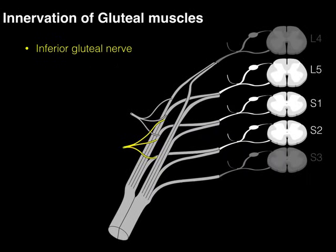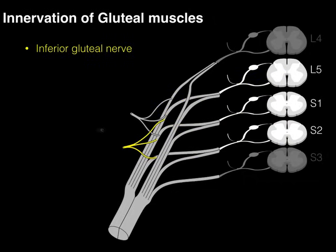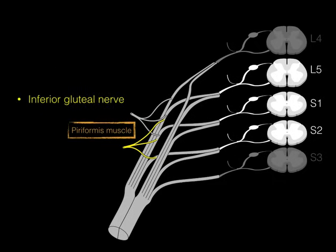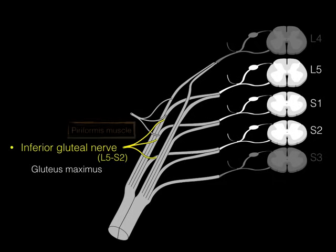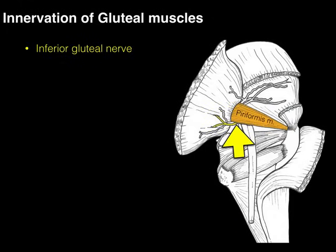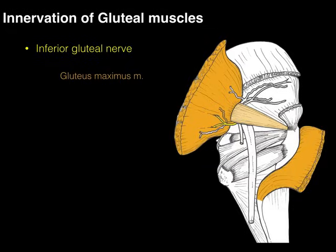The inferior gluteal nerve arises from L5 to S2 levels. The motor neuron cell bodies arise in the ventral horn of the spinal cord, come out the ventral rami, and go into the inferior gluteal nerve. This only innervates one muscle: the gluteus maximus. The inferior gluteal nerve gets its name because it exits below the piriformis muscle to innervate the gluteus maximus.